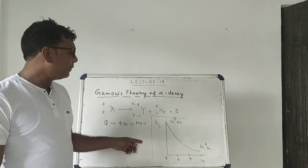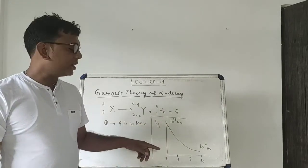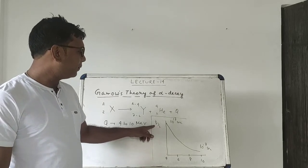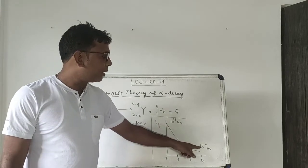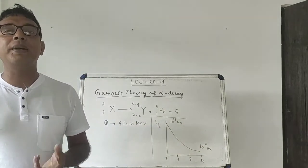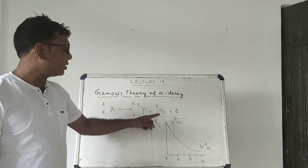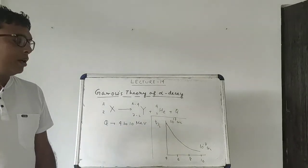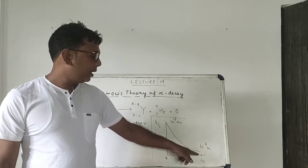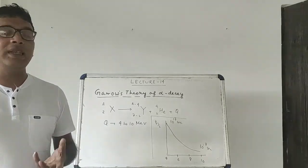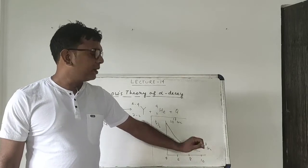We also saw how half-life changes with the change of energy. The half-life of the nucleus varies from 10^17 seconds to 10^-7 seconds. When the energy released is about 4 MeV, the half-life is 10^17 seconds, whereas when the energy released is about 10 MeV, the half-life is 10^-7 seconds.